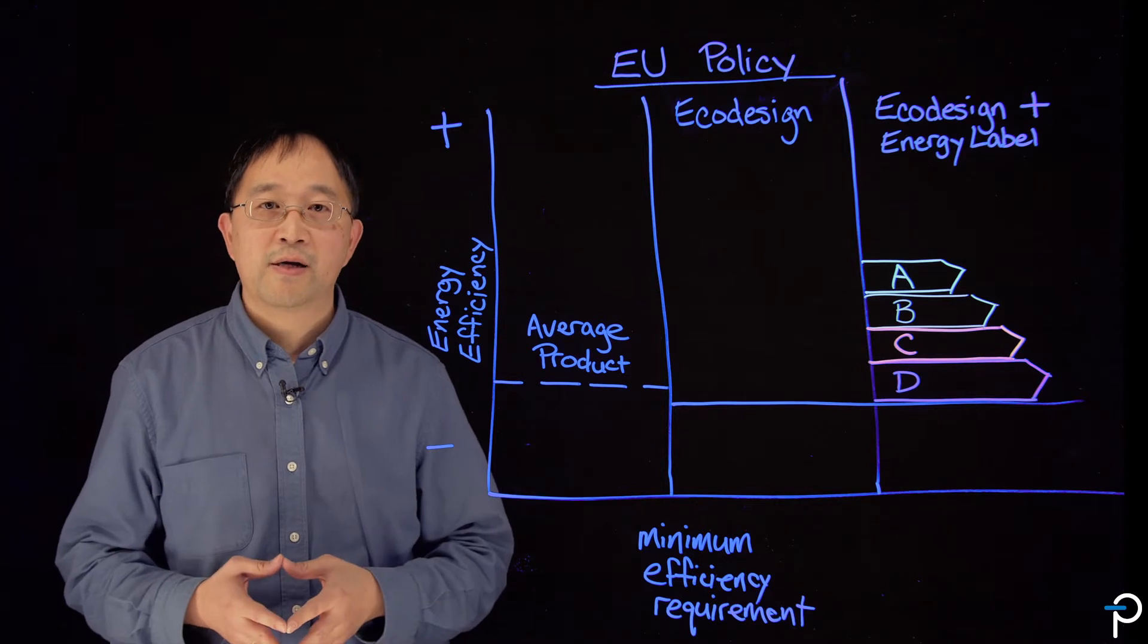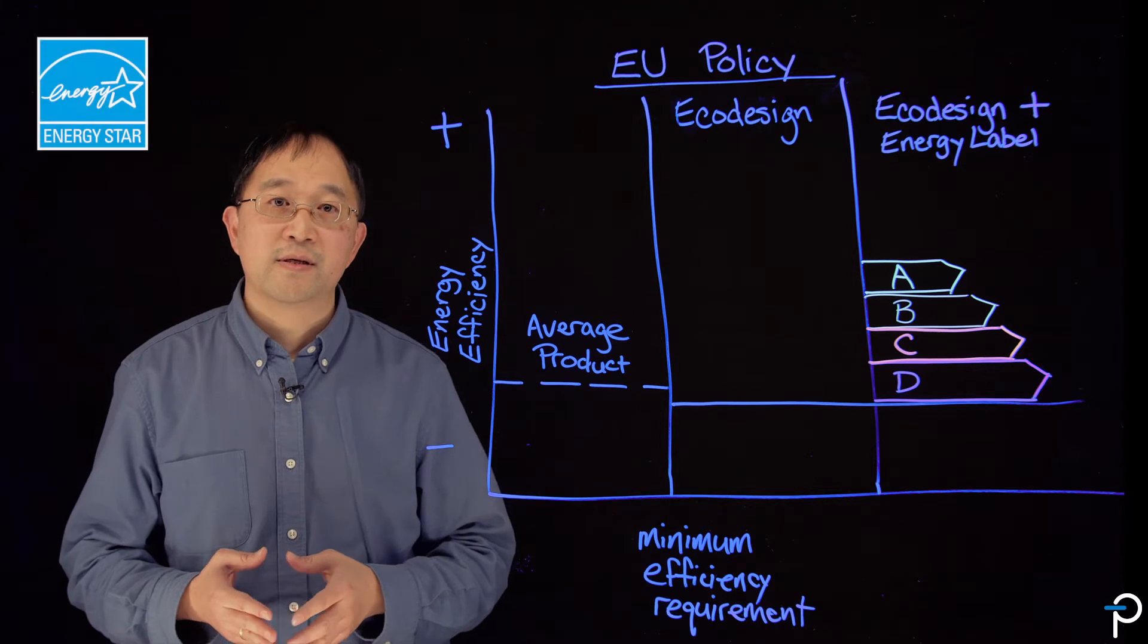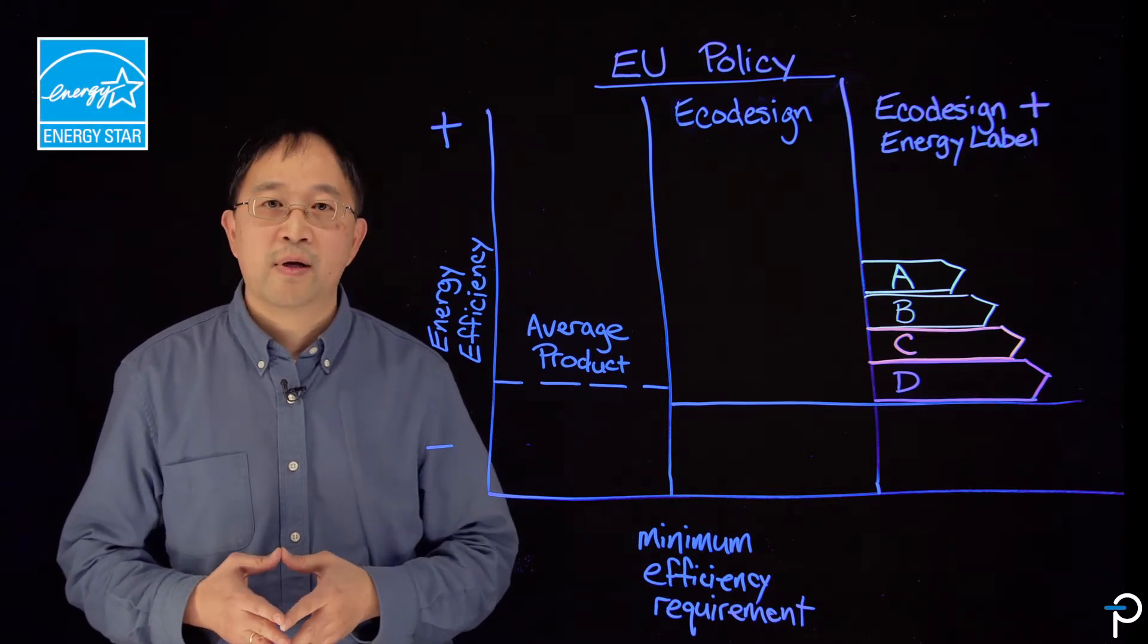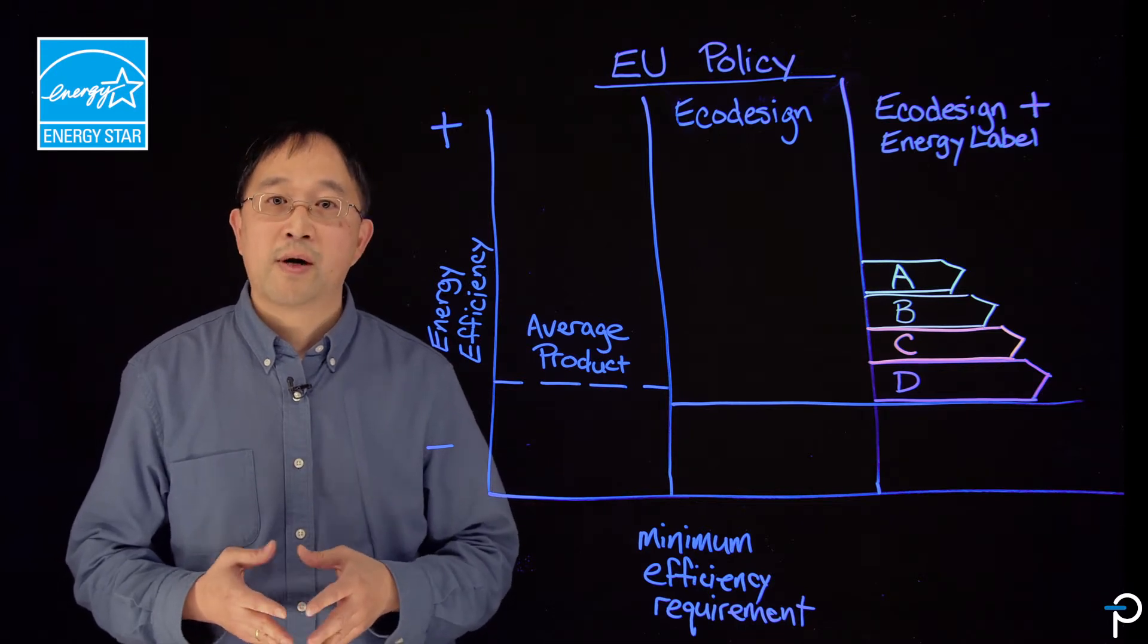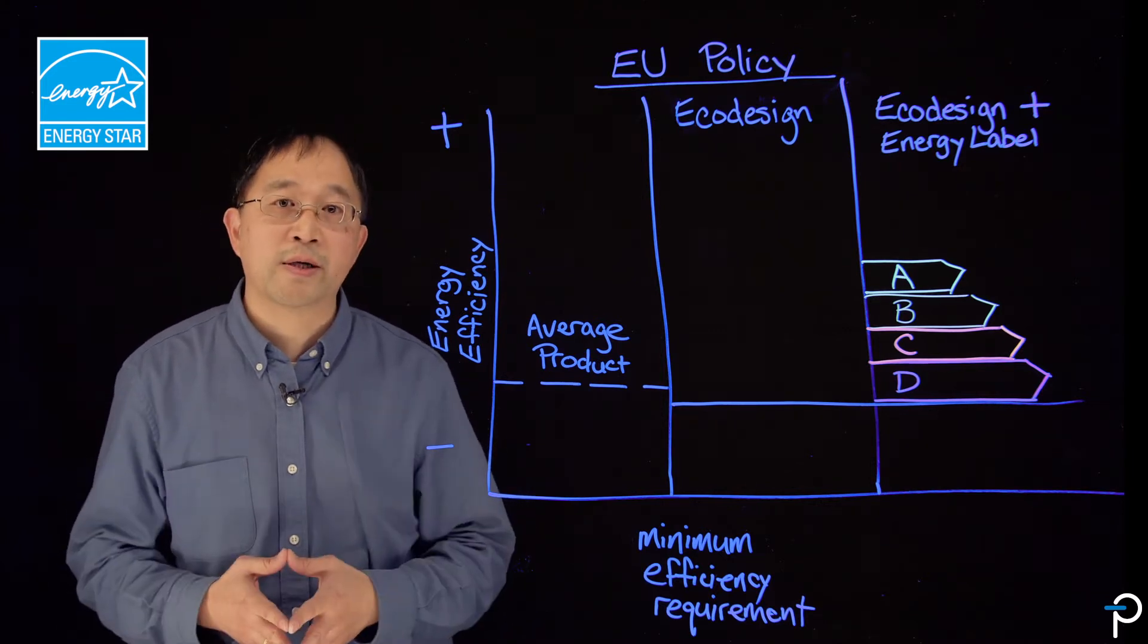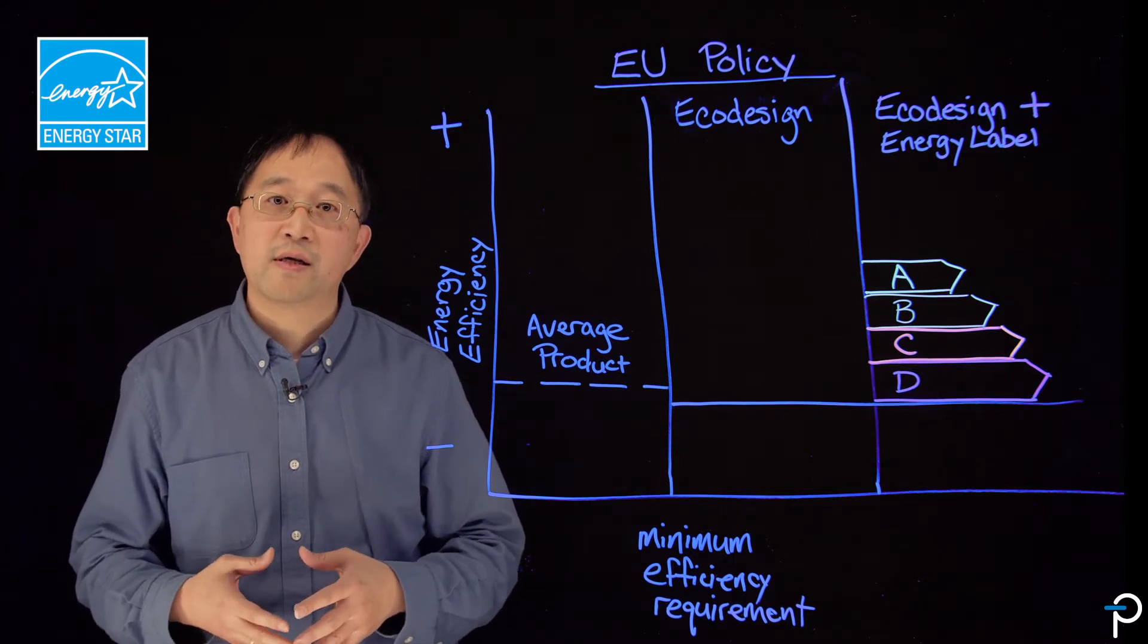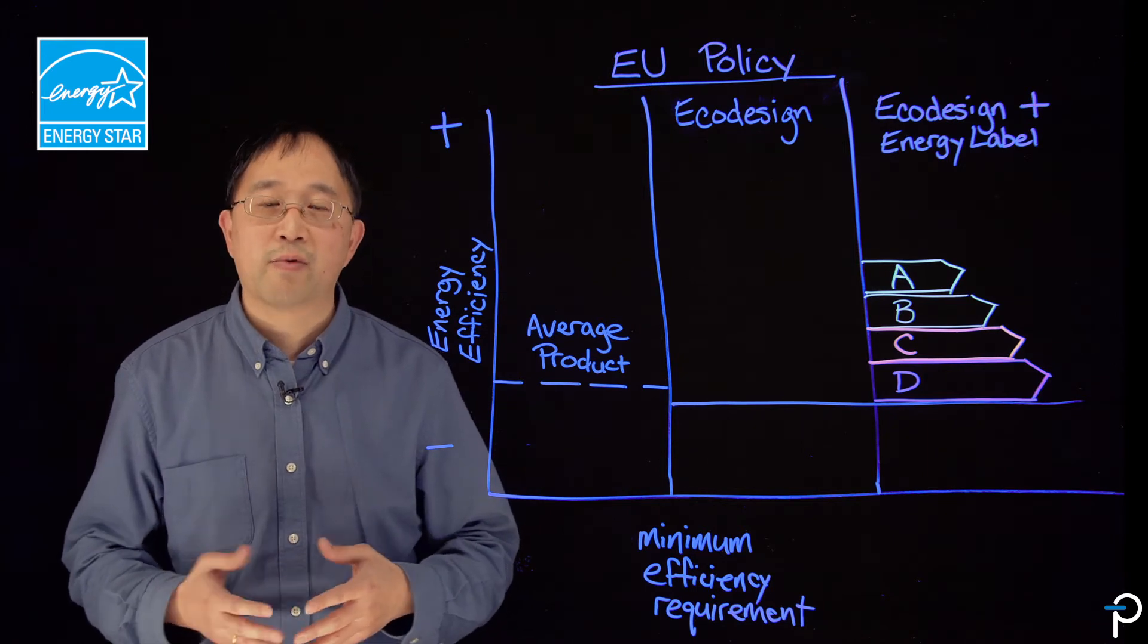For a voluntary label, you may consider something like the Energy Star label. This is administered by the Environmental Protection Agency, or EPA, in the U.S. Although manufacturers are not required to certify to Energy Star to sell their products in the U.S., unless it's for a government institution perhaps, it is still very much sought after because it is a way that manufacturers use to differentiate their brands as high performance.